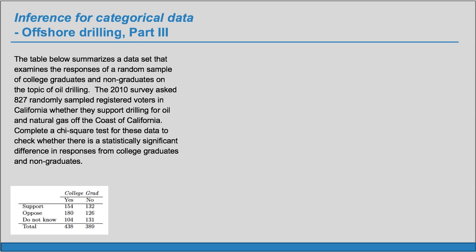So here we have a two-way table with three rows and two columns, so a three-by-two table. When we see this three-by-two table, we're thinking either it's going to be a chi-square test of independence or a chi-square test of homogeneity. Here we have one random sample — the 2010 survey asked 827 randomly sampled registered voters — so this is going to be a chi-square test of independence.